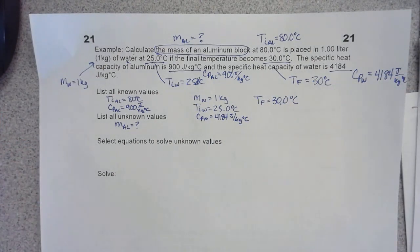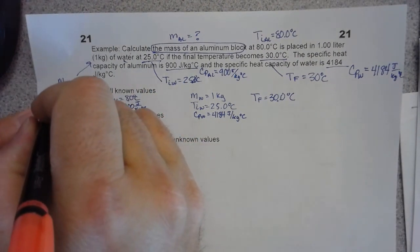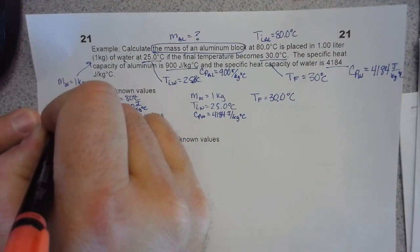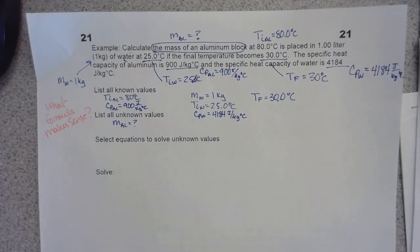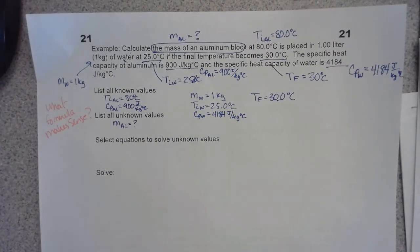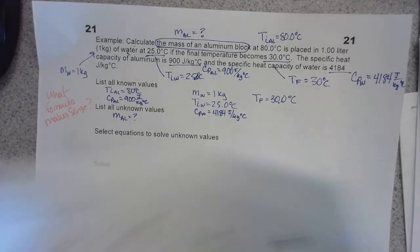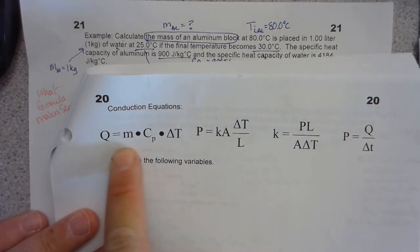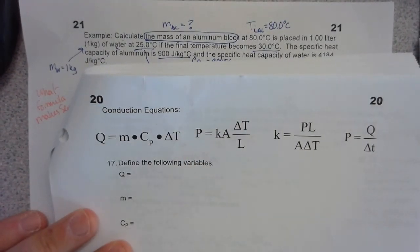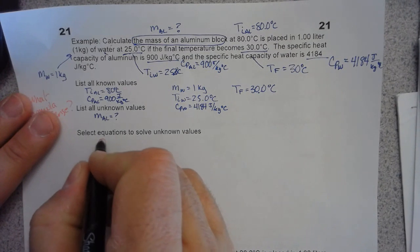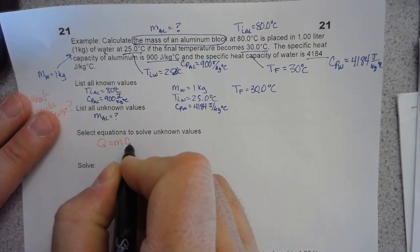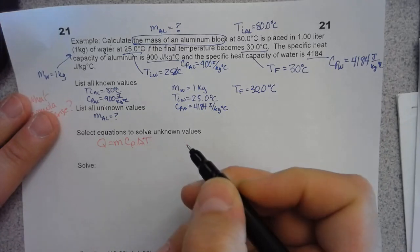Now I'm at a sticking point — this is where you have to ask yourself: what formula makes sense? I have temperatures, specific heat capacities, and masses. Going back to your formula sheet, the only one that makes sense is the Q formula. The equation I'm going to write is Q = mCpΔT.